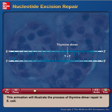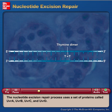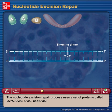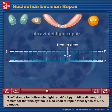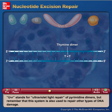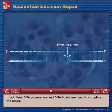This animation will illustrate the process of thymine dimer repair in E. coli. The nucleotide excision repair process uses a set of proteins called UVRA, UVRB, UVRC, and UVRD. UVR stands for ultraviolet light repair of pyrimidine dimers, but this system is also used to repair other types of DNA damage. In addition, DNA polymerase and DNA ligase are used to complete the repair.